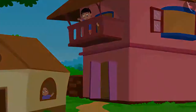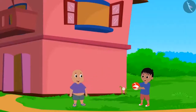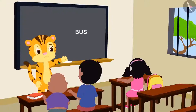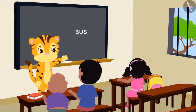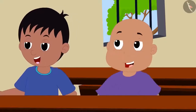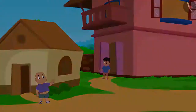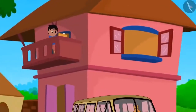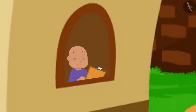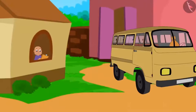Raju and Bablu are best friends. In the classroom, their teacher Mrs. Khanna asked them to draw a picture of a bus as homework. Both of them went home, looked out from the windows of their house, and began to draw the picture of a bus parked in their lane.